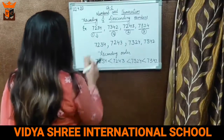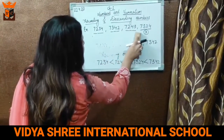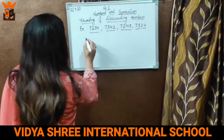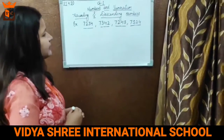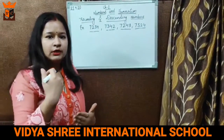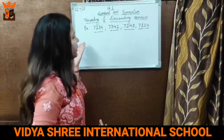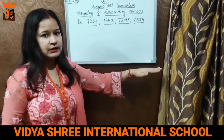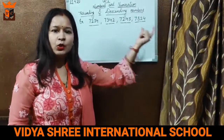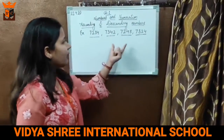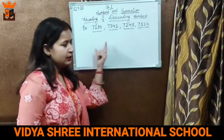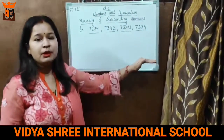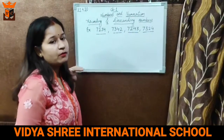Now let's move to another concept — descending numbers. Again, we are taking these same numbers as an example. But now we have to arrange these numbers from greatest to smallest, that means in descending order. In ascending order we arrange the numbers from smallest to greatest, and in descending order we arrange the numbers from greatest to smallest. Simply, we can take the last one first, second last second, third last third, and the first as fourth.